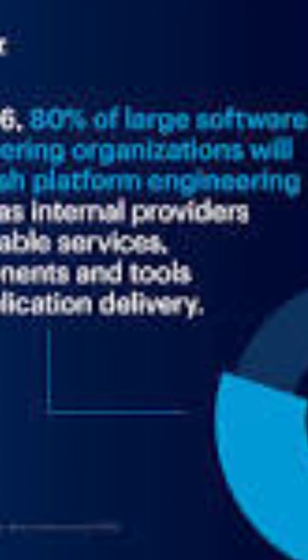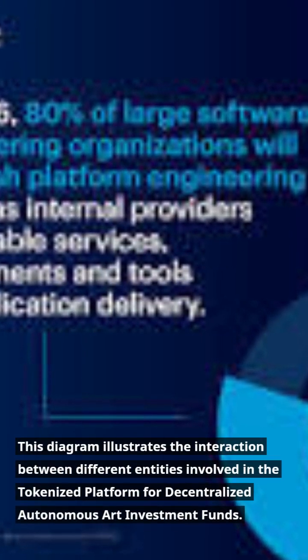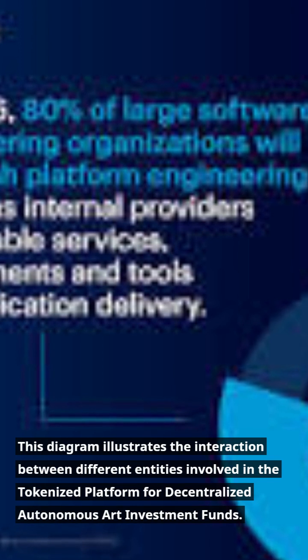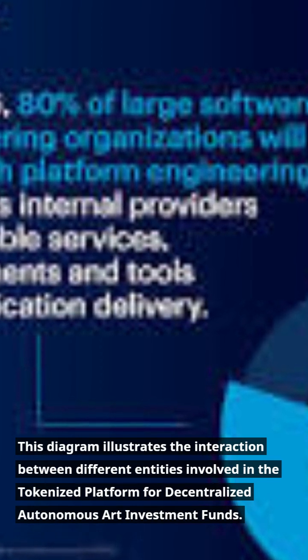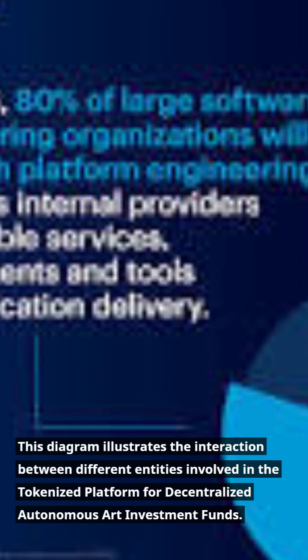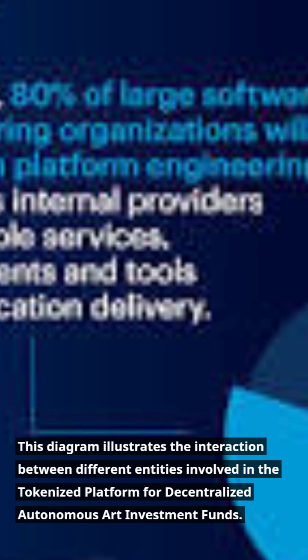This diagram illustrates the interaction between different entities involved in the tokenized platform for decentralized autonomous art investment funds. Investors hold AIF tokens, AIF managers manage the art portfolio, art experts conduct due diligence, and smart contracts govern investment activities autonomously on the blockchain network.